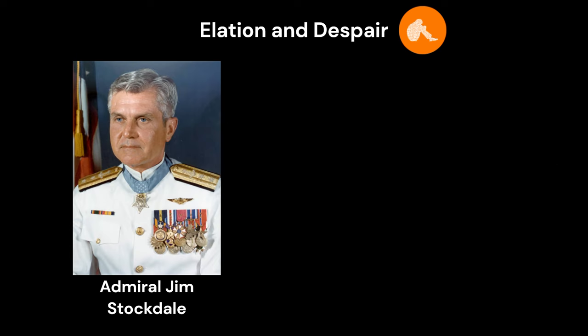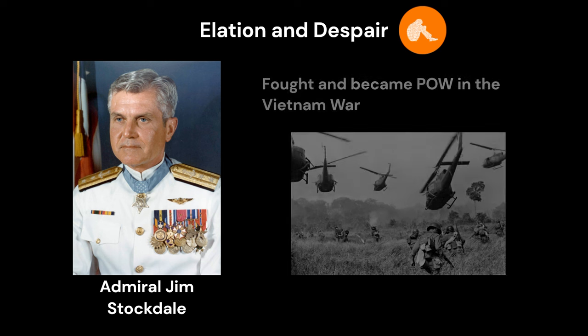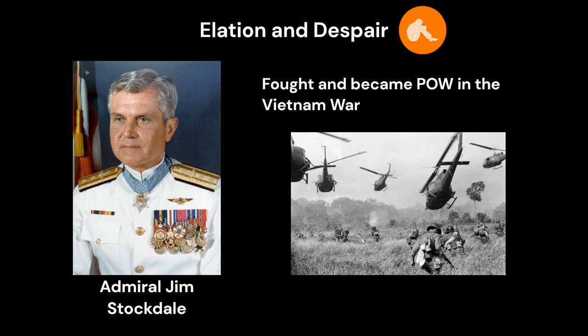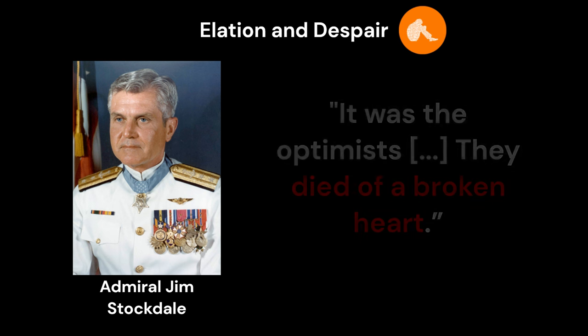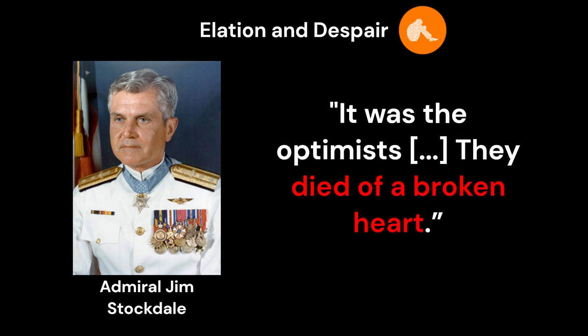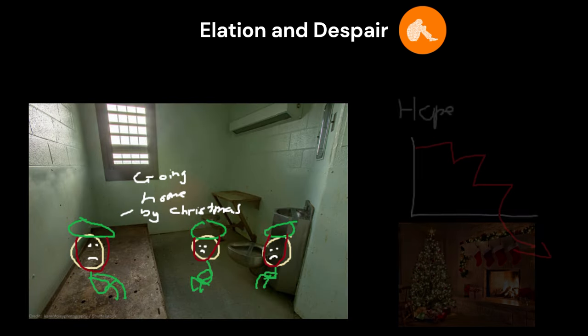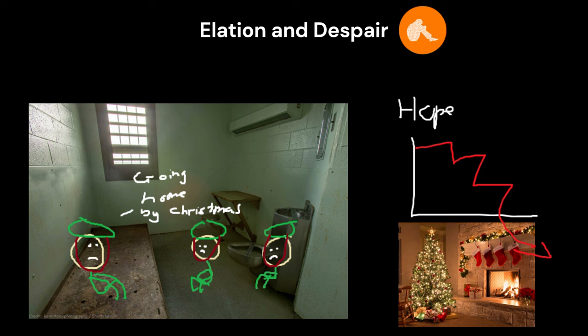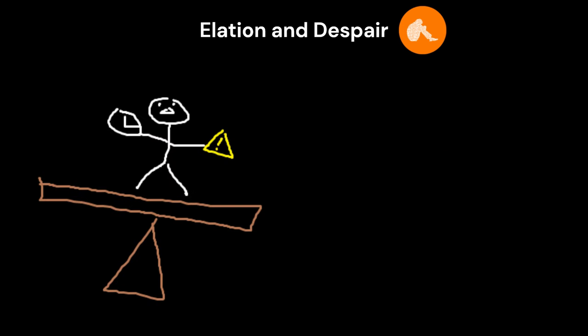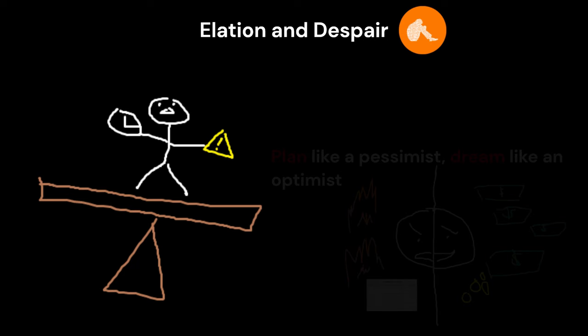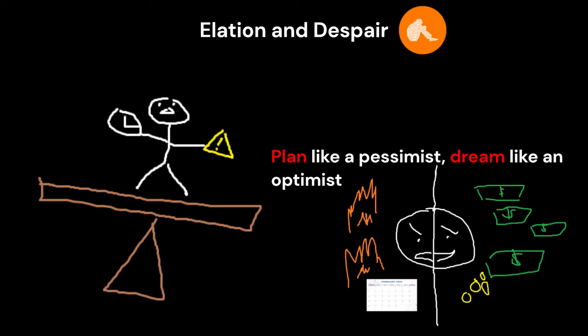Admiral Jim Stockdale fought in the Vietnam War who eventually became a POW. When released decades later and asked who had the hardest time in prison, he said it was the optimists. They died of a broken heart. The prisoners that often said they were going home by Christmas had the hardest time because as each Christmas passed, their hopes dwindled. The trick is that to stick around for the long term, you have to put up with the short terms. Plan like a pessimist and dream like an optimist.